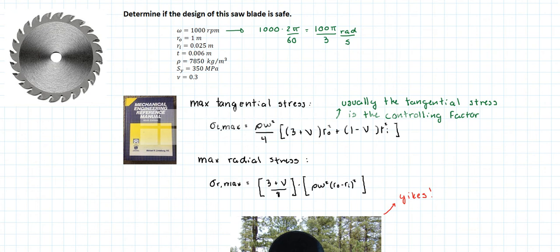A thickness of 0.006 meter which is constant, the density of steel which is 7850 kilograms per cubic meter, a yield strength of 350 MPa, and a Poisson ratio of 0.3.